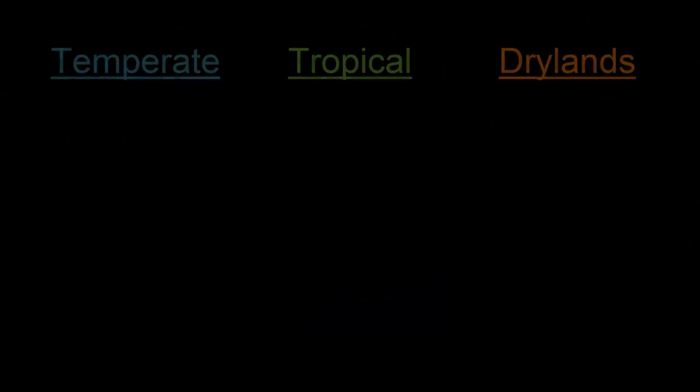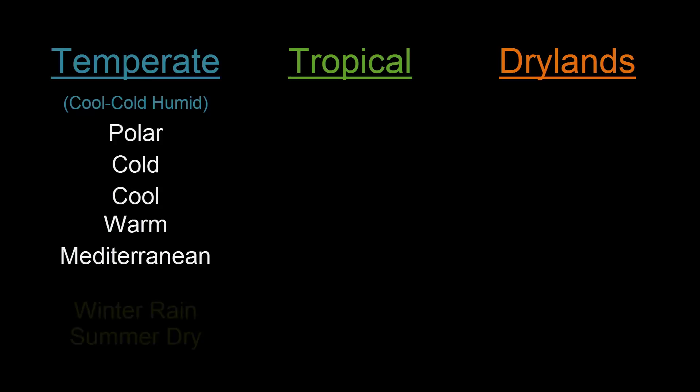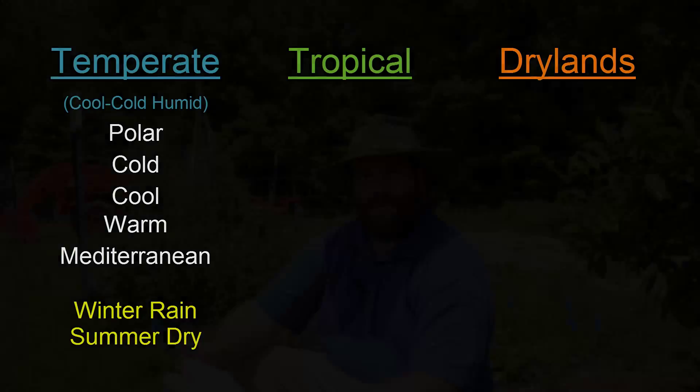We talked about the broad climate zones and how they range from temperate to tropical and also dry lands. We talked about how in the temperate area it's humid but also cool to cold, and how it ranges all the way from the polar regions to being cold, cool, warm, and Mediterranean. One of the predominant characteristics of the temperate region is that we have winter rain and summer dry. From the Mediterranean subclimate we can almost transition into the tropical climate.